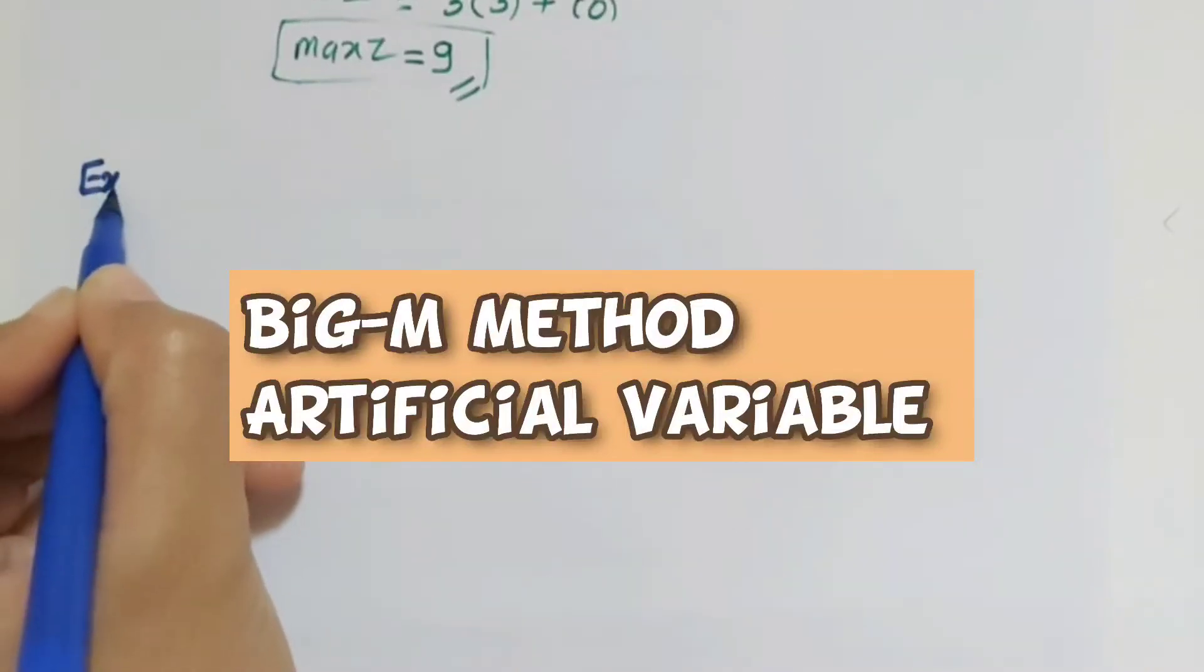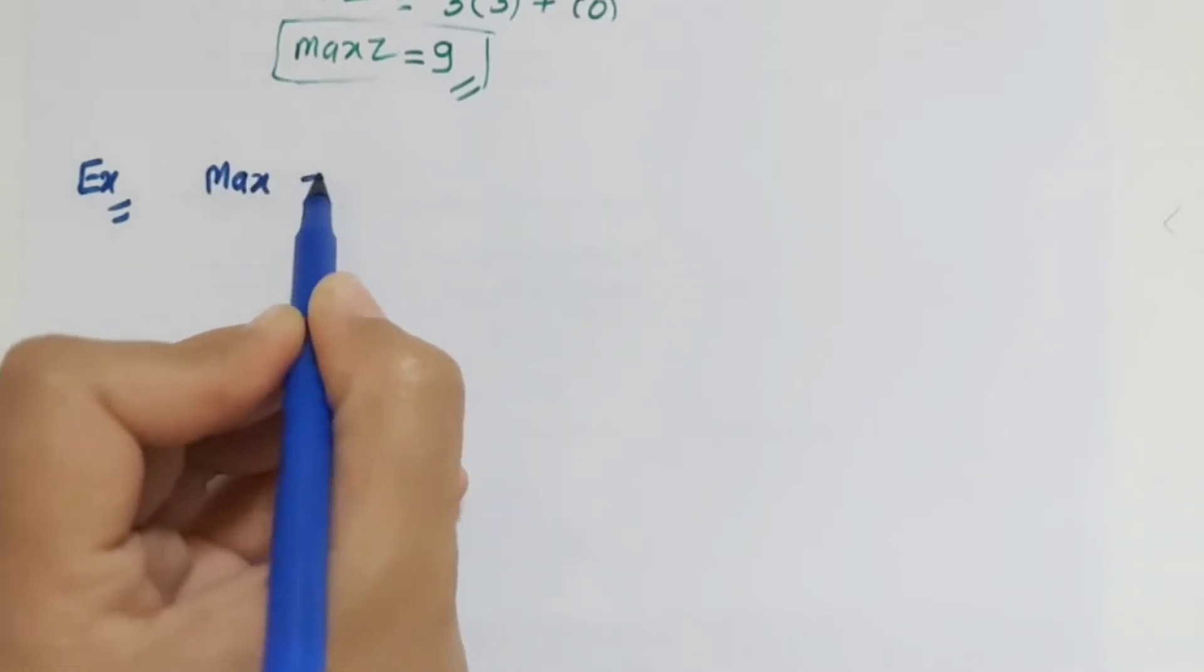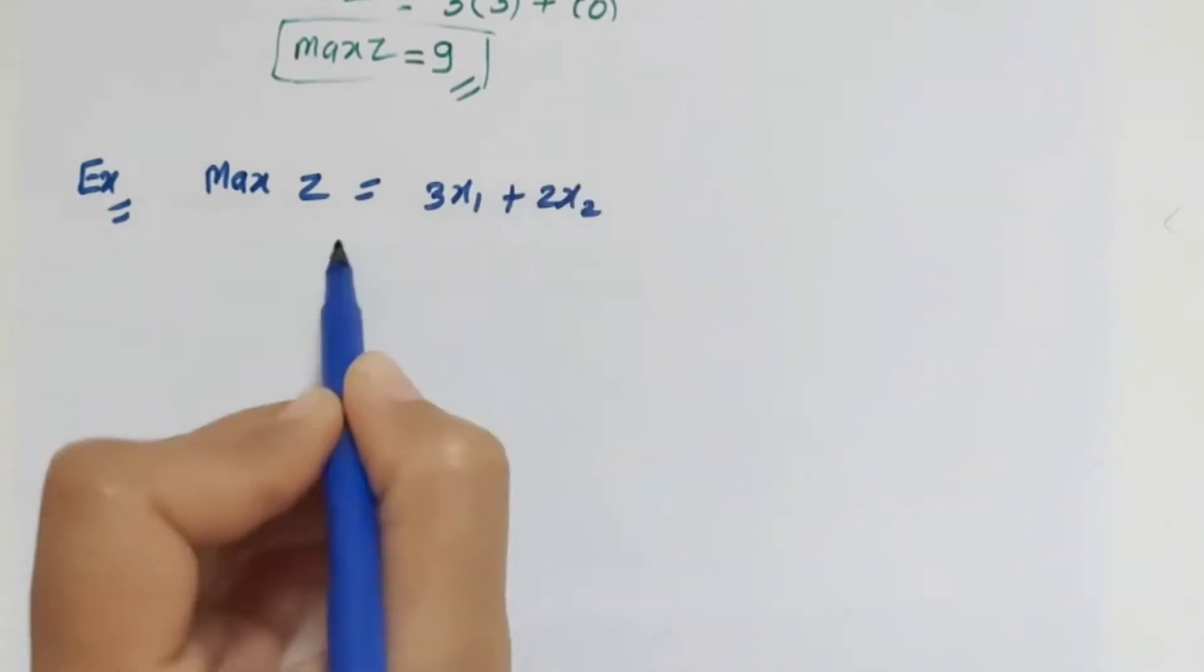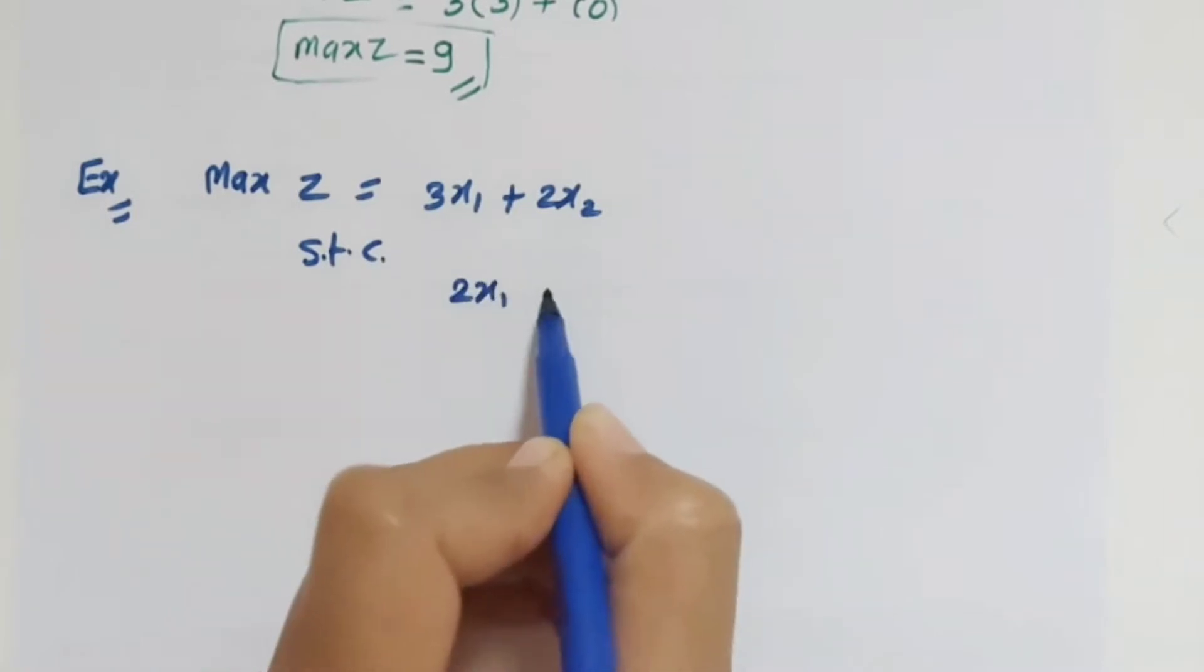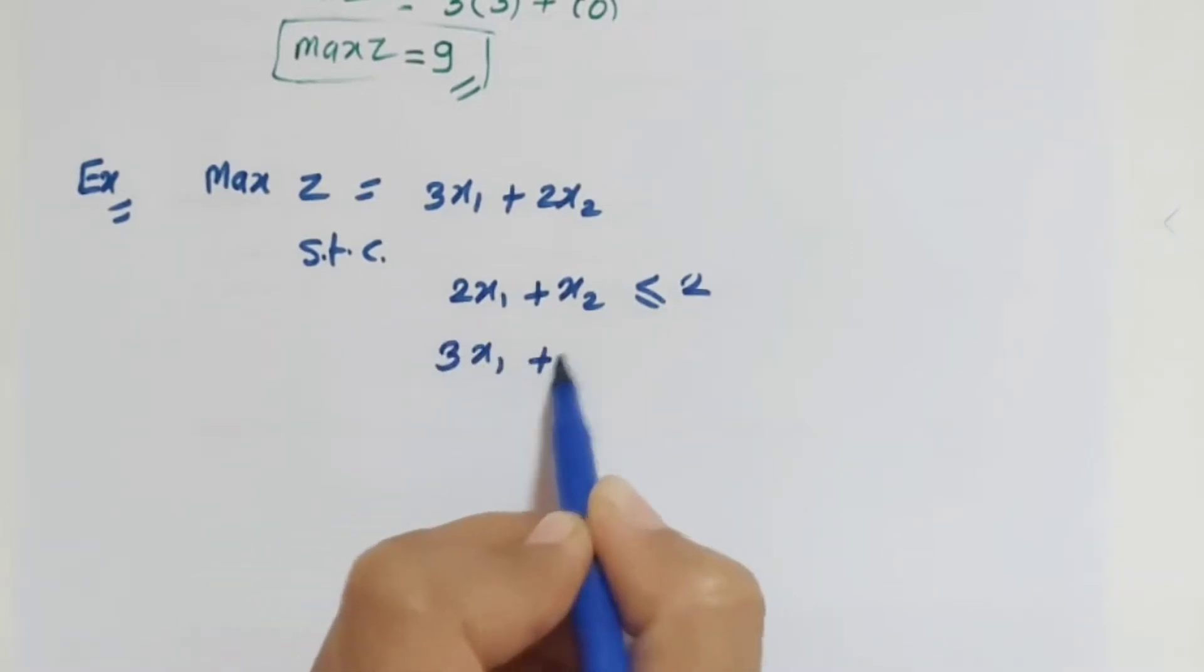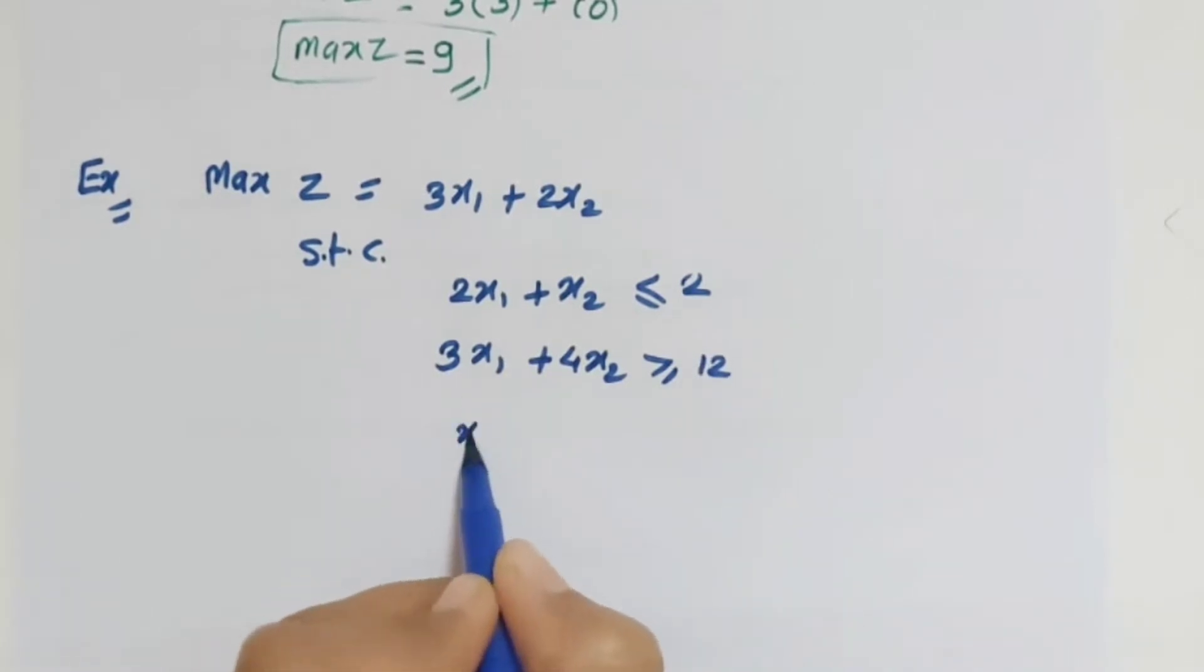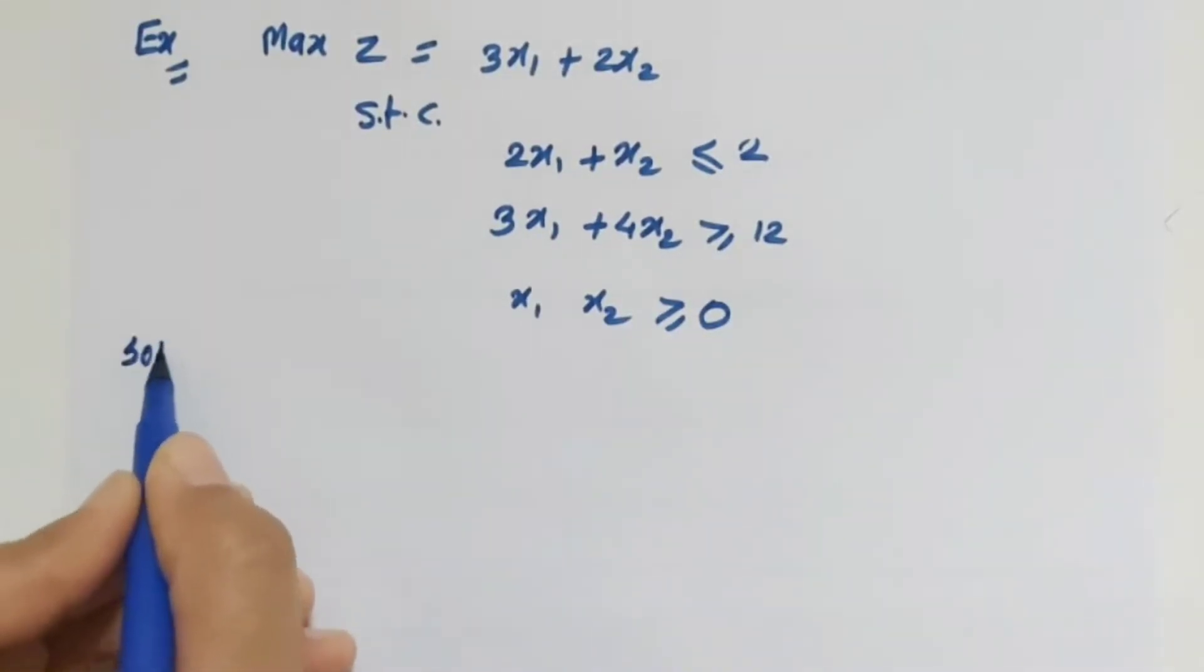Next example: maximize z equals 3x1 plus 2x2 subject to the constraints 2x1 plus x2 less than or equals 2, next is 3x1 plus 4x2 greater than or equals 12, and x1, x2 greater than or equals 0.